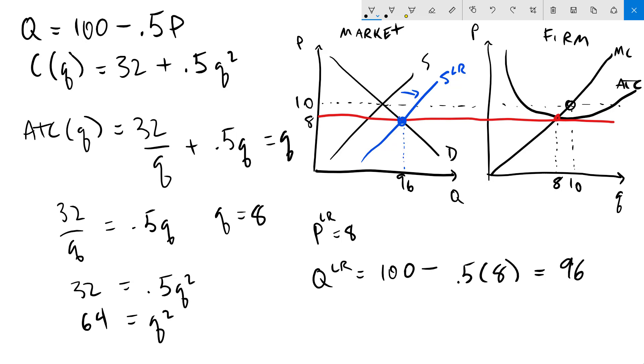The last thing that I'm going to do here is calculate the number of firms that are going to be in the long run equilibrium. Since there is a total output of 96 and each firm is producing 8, then 96 will be 8 times n number of firms in the long run. Simply divide both sides by 8 and I'll get the long run number of firms is 12.